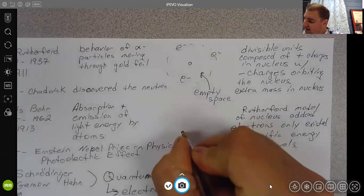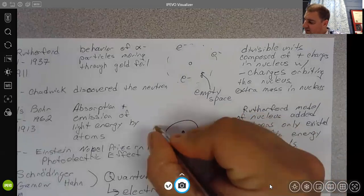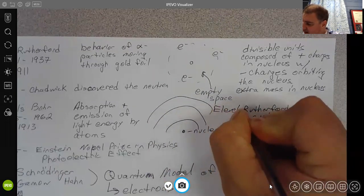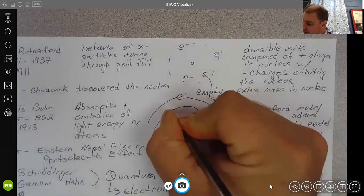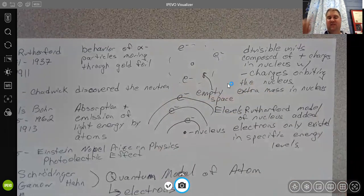Here for Bohr, let me say that this is the nucleus. And let me draw it like this with energy levels, E levels, where the electrons would exist. And those electrons can move up and move down through those energy levels as they absorb or emit light.